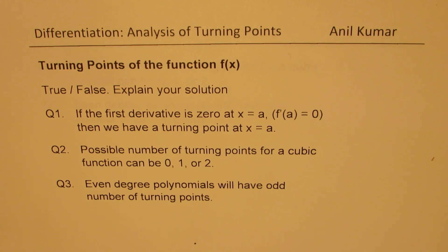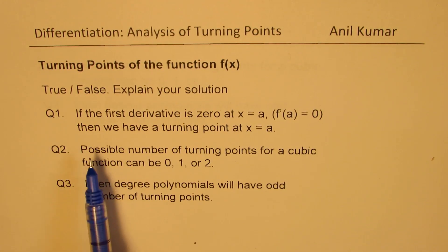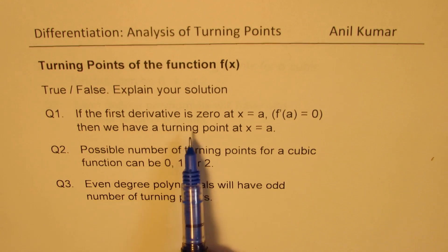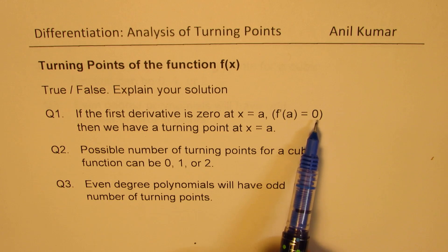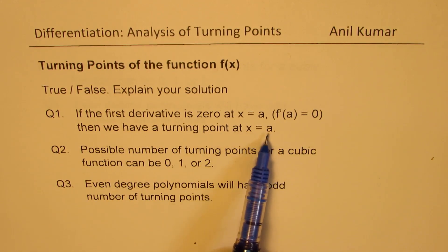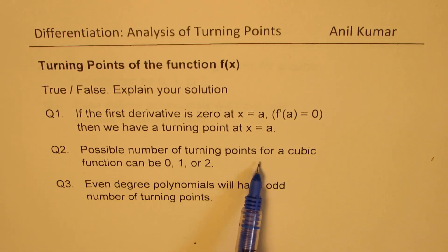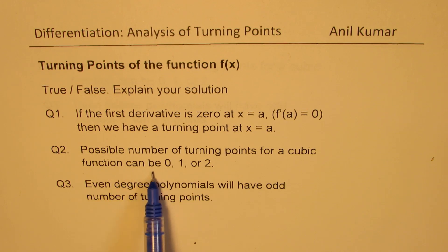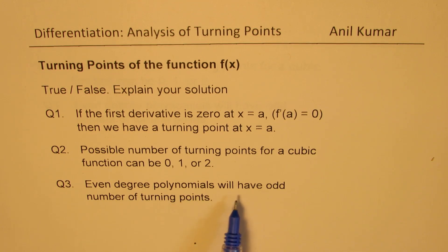These are true or false questions — you need to explain your answer. Question number one: if the first derivative is zero at x equals a, that means f'(a) equals zero, then we have a turning point at x equals a. Question number two: the possible number of turning points for a cubic function can be zero, one, or two. Question number three: even degree polynomials will have an odd number of turning points.